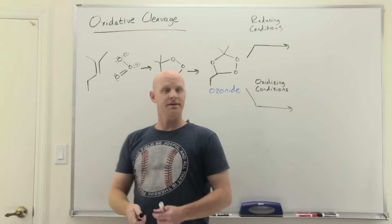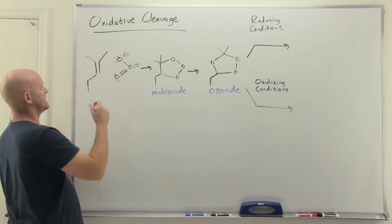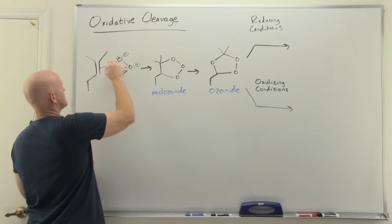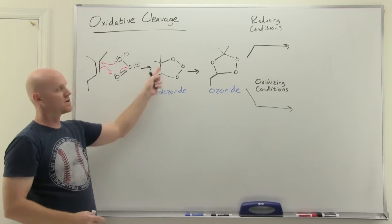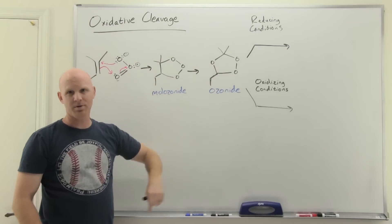We're not going to show the entire mechanism but we'll show just a little bit of it. Your alkene reacts with ozone to form what's called a malozonide. This malozonide is going to rearrange to an ozonide.